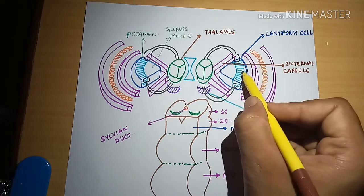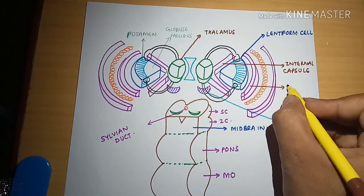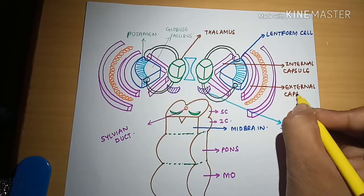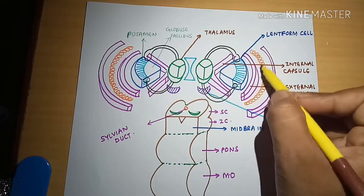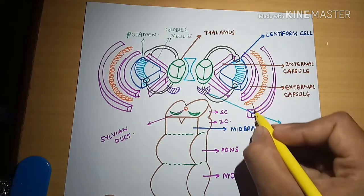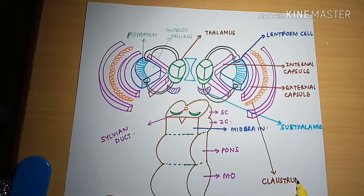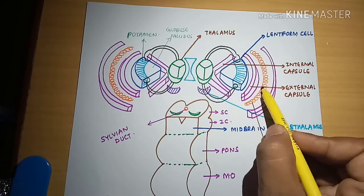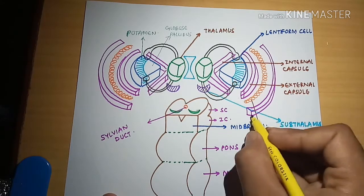More lateral to the lentiform nucleus, just as there is an internal capsule, there must be an external capsule — and indeed it is present more lateral to the lentiform nucleus. Further lateral to the external capsule, a group of grey matter is present called the claustrum. And more lateral to the claustrum, there is also an extreme capsule present.